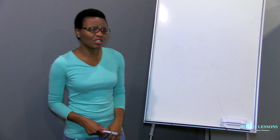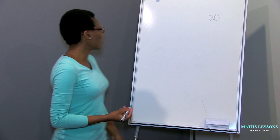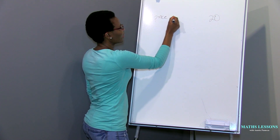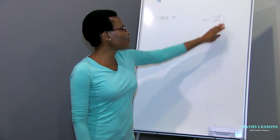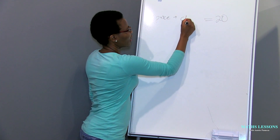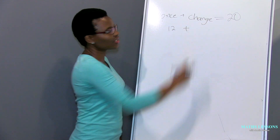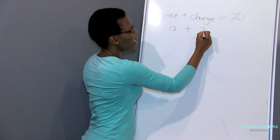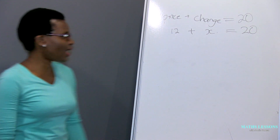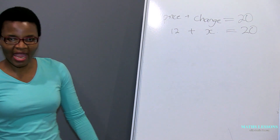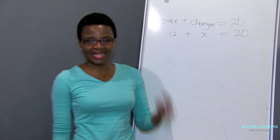Let's take a simple example: you have 20 rand in your pocket and you want to buy a chocolate. You know the price of the chocolate. You want to ask yourself how much change you're going to get. So the price is 12 rand, you don't know the change — that's what we're asking, so we name it x. That's a maths problem. You're already solving for x, and this is why you solve for x in school.